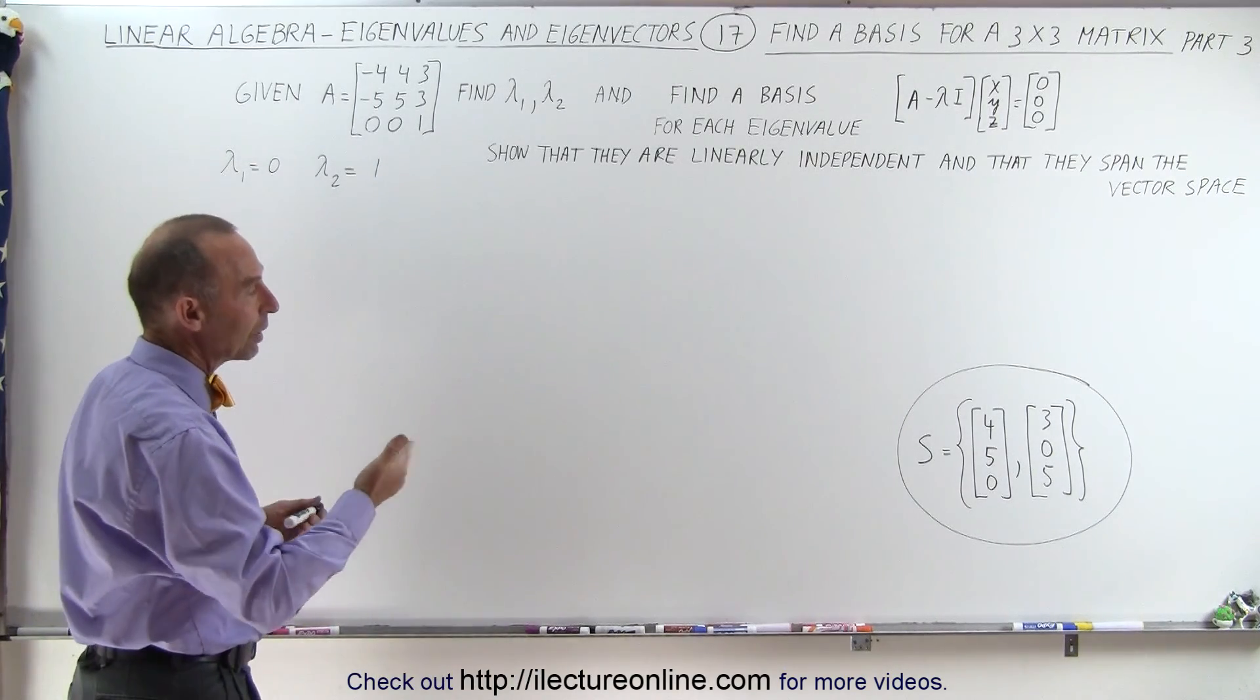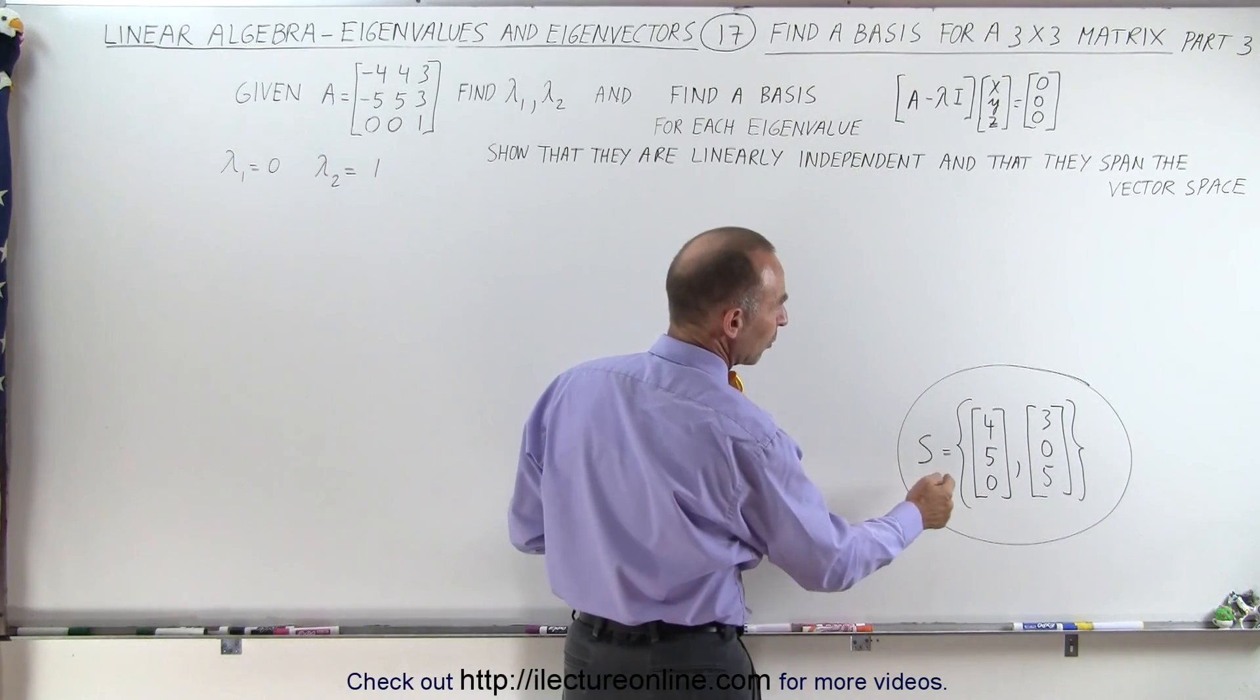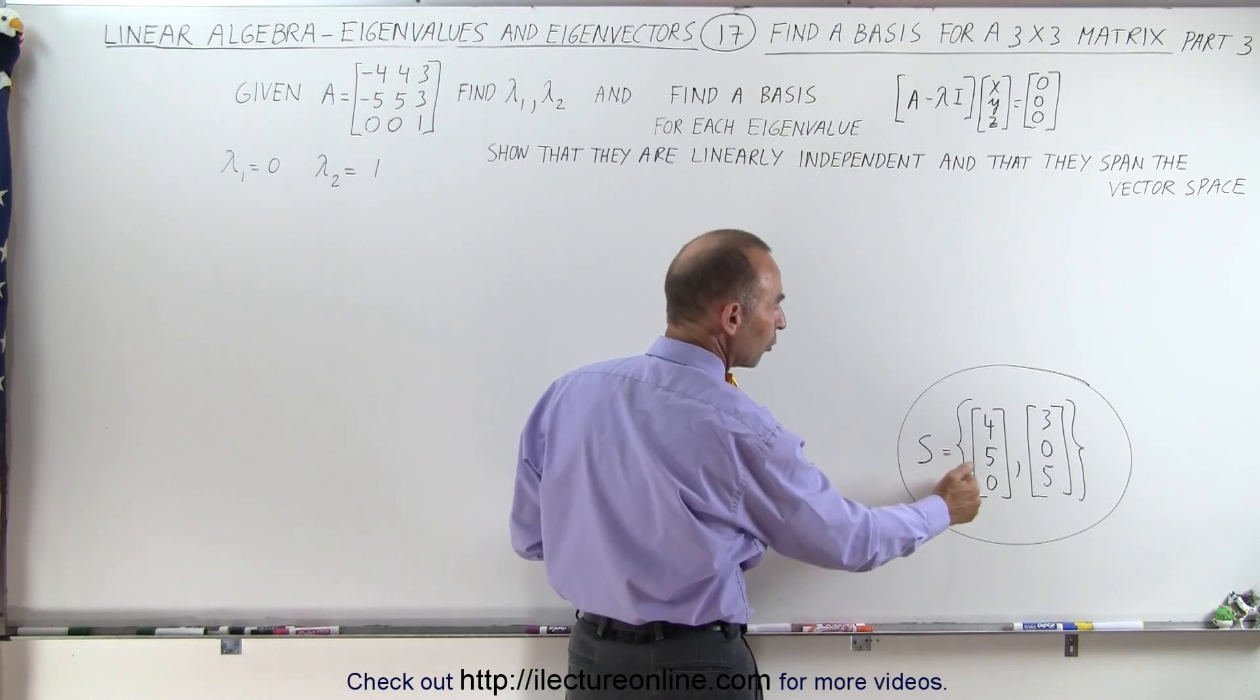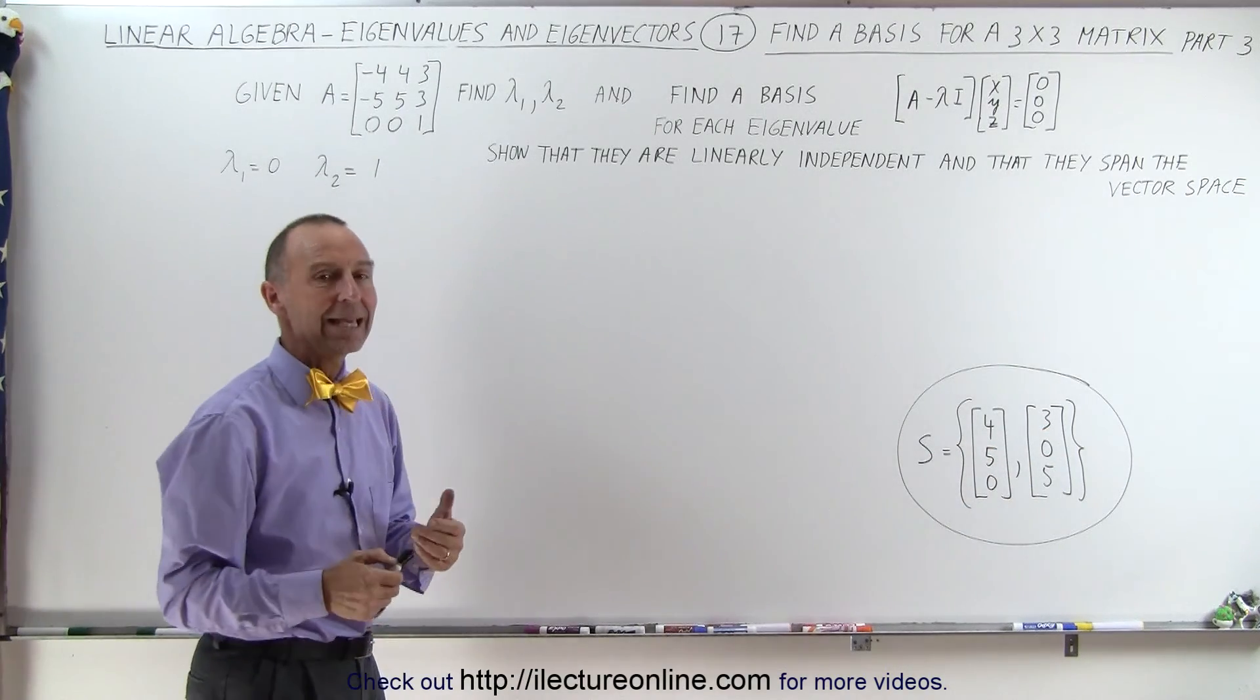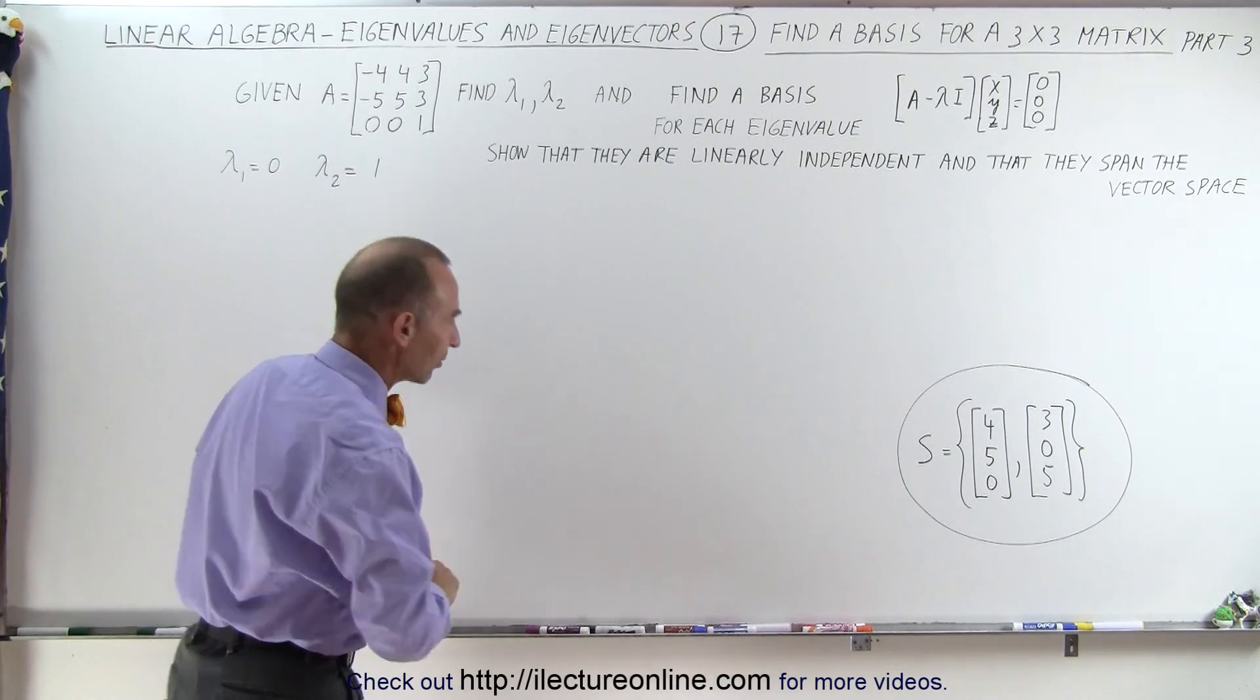First of all, we can show that they're linearly independent in such a way that there's no way in which you can multiply one eigenvector with a constant to obtain the other eigenvector. So it's not an integer multiple or a constant multiple of the other vector.